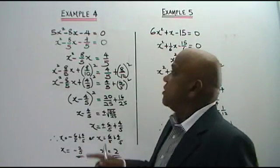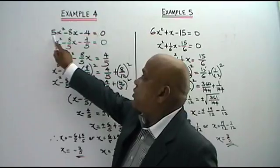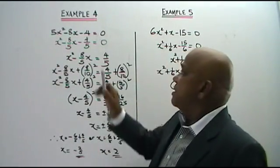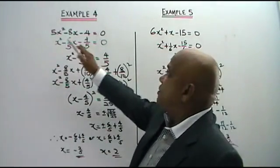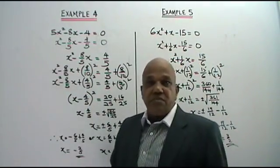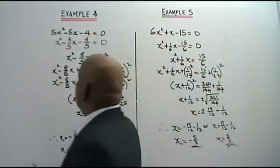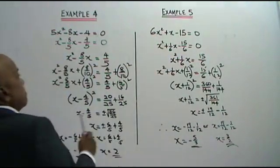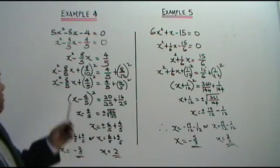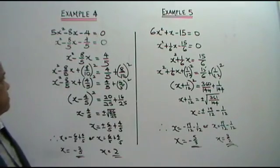Quadratic equations where a is not equal to 1 — where a is more than 1. We are supposed to solve these two quadratic equations by completing the square. Let's look at the example form first. You're given 5x squared minus 8x minus 4 equals to 0.